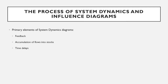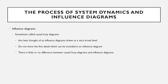The primary elements of system dynamic diagrams are feedback, accumulation of flows into stocks, and time delays. Influence diagrams are sometimes called causal loop diagrams. There is little or no difference, but a causal loop diagram is best thought of as an influence diagram at a very broad level, which does not show the fine details which can be included in an influence diagram.